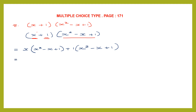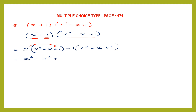Now let's multiply. We say x into x squared, which is x to the power of 1 plus 2, that is 3. Then x into minus x — the sign is minus, x into x is x squared. Then x into 1 is plus x.